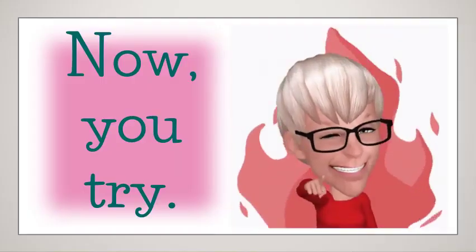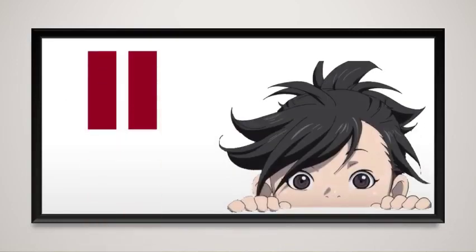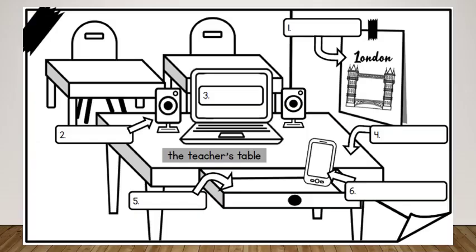Now I want you to try. Take out Starter Handout 8. There are words in the boxes, and there are two pictures. I want you to label the pictures correctly — use these words and put them in the correct boxes. Remember, pause the video while you do the exercise. Did you pause the video? Are you done? Okay, let's check our answers. Take out your red pen. Are you ready?